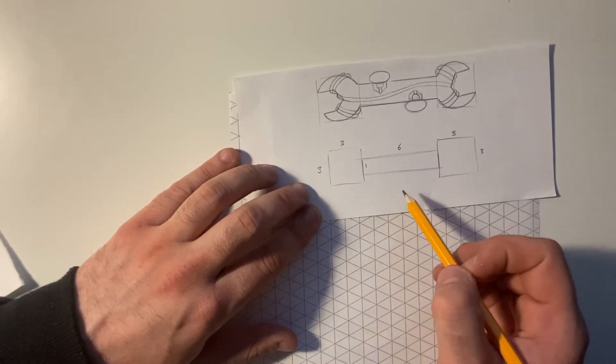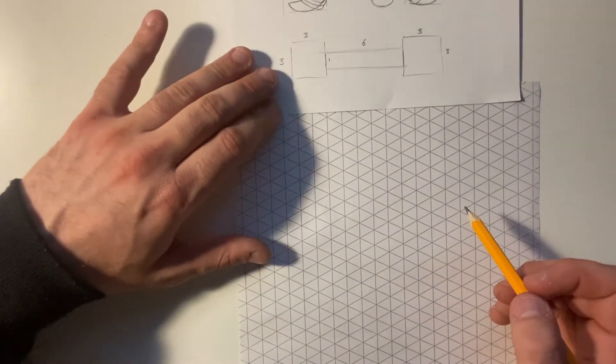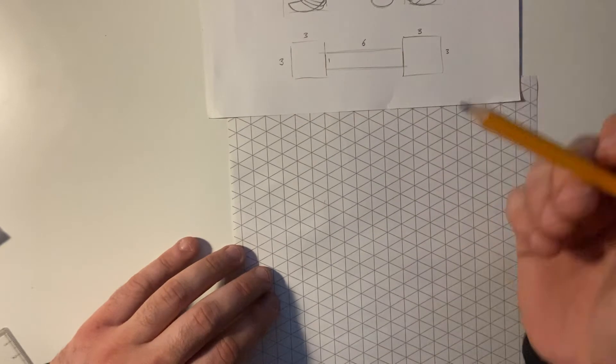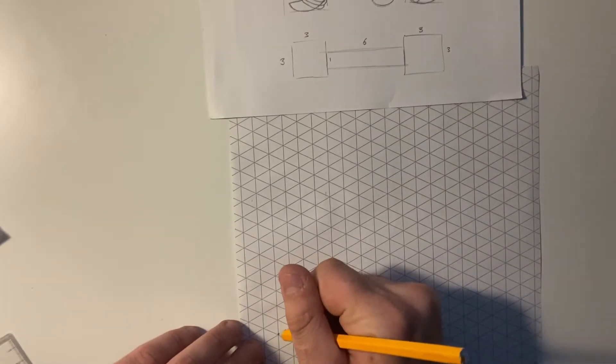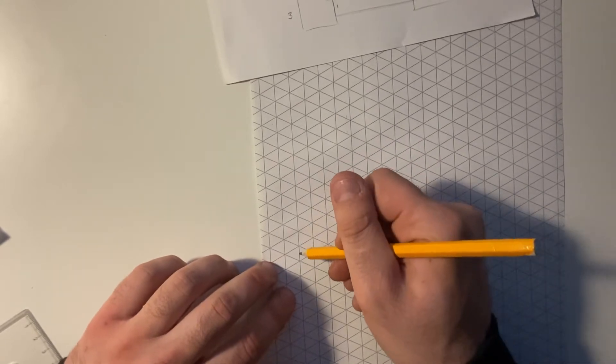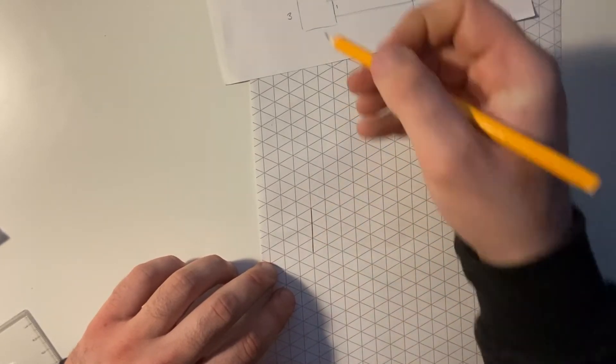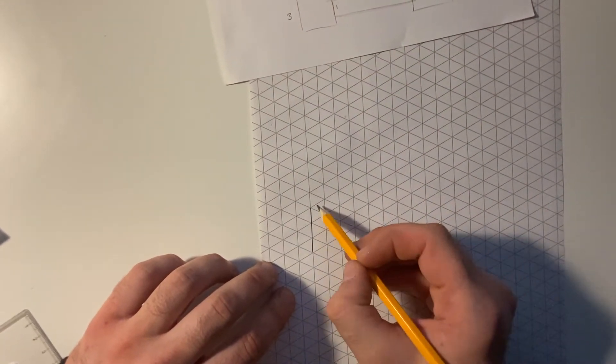So I'm going to convert this face view now into isometric view. So I'm going to focus on this left square to begin with, so 3 by 3 to begin with. So I'm 3 high on my vertical and I'm 3 high on my horizontal.